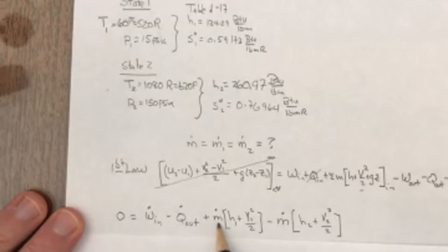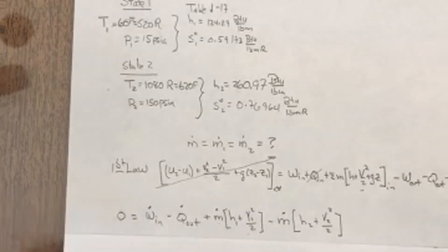This is what my first law would reduce down to. So I just have the work in minus the Q out, plus the mass coming in, and it's carrying with it some entropy and some kinetic energy, and I'm going to neglect the potential energy. And then here's the stuff going out, H and M2.